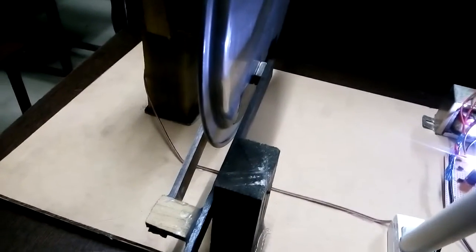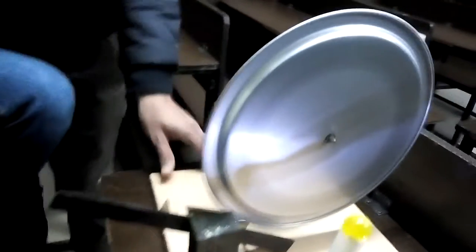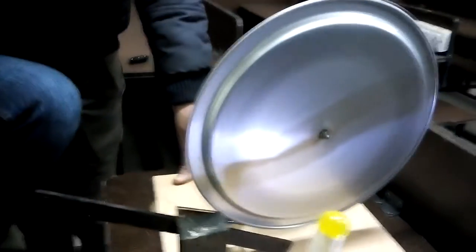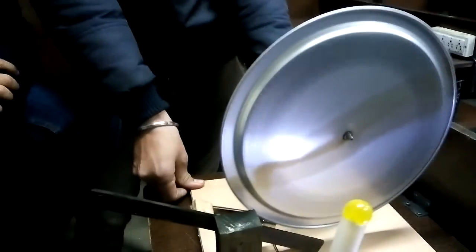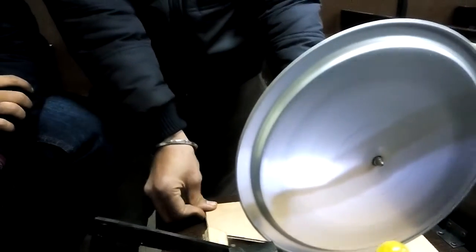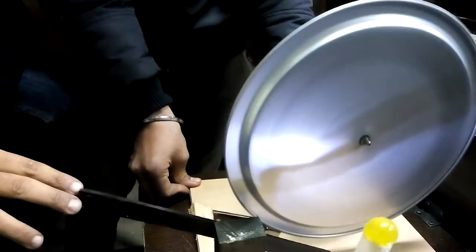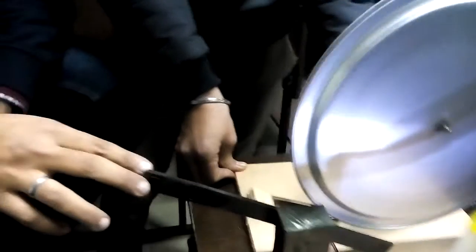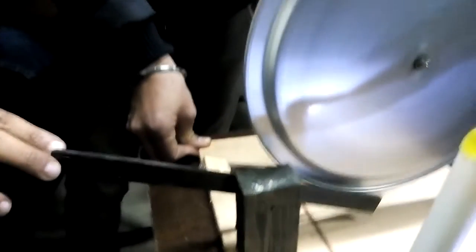Now I will demonstrate the whole mechanism. I will request my colleague to make the lever on. As you can see, the motor is moving. Due to the movement of the motor, the plate is moving. This plate is of a non-magnetic material.